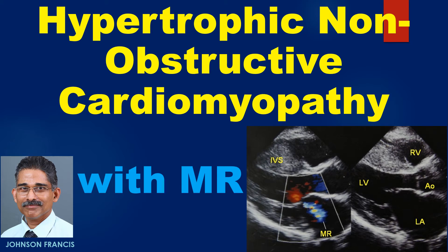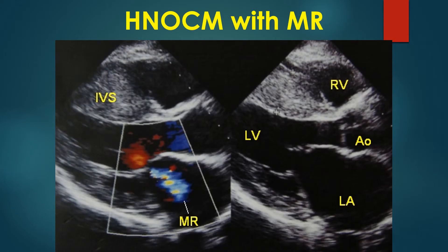Color Doppler echocardiogram from the parasternal long axis view in hypertrophic non-obstructive cardiomyopathy shows a grossly thickened interventricular septum. The posterior wall of the left ventricle does not show much hypertrophy. This type of hypertrophy is called asymmetric septal hypertrophy and is characteristic of hypertrophic cardiomyopathy.